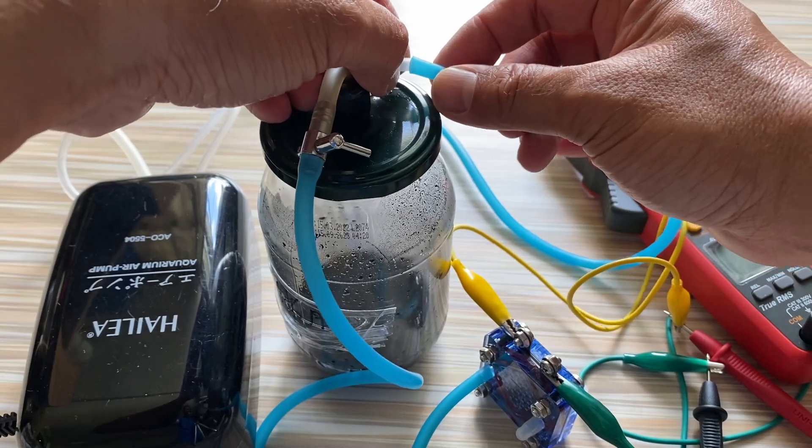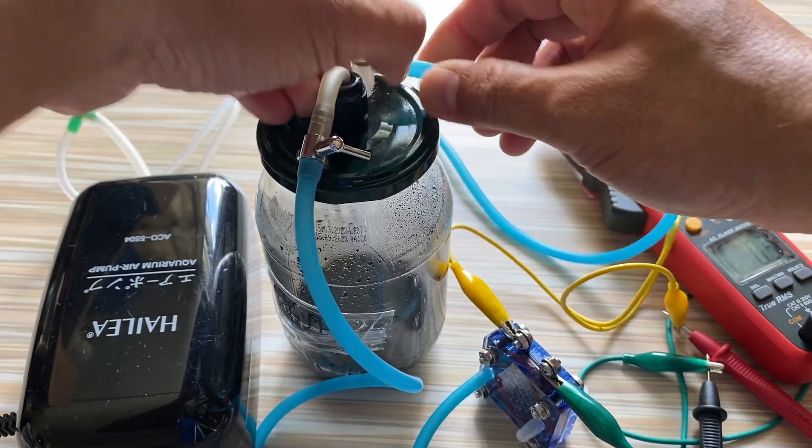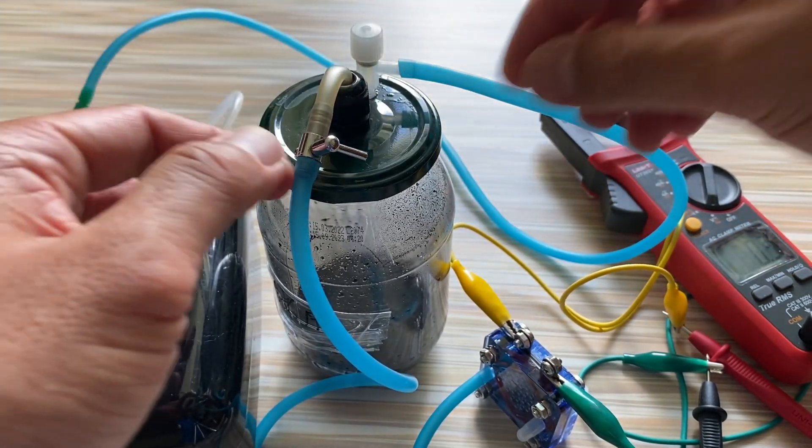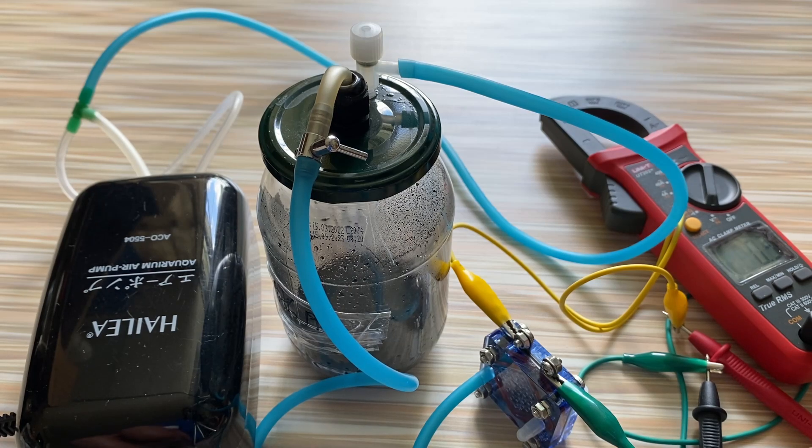Connect the air compressor to the inlet of the reactor, increasing pressure inside of the reactor and push more hydrogen out and deliver to the fuel cell.